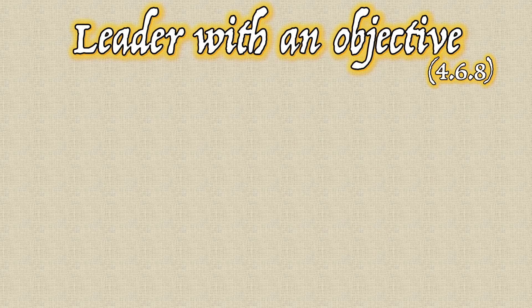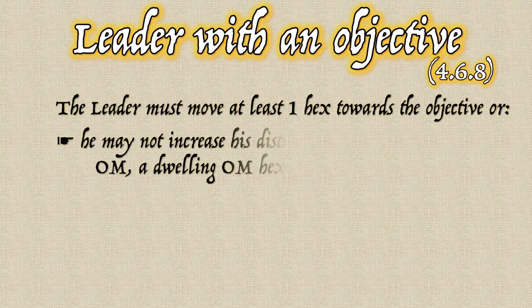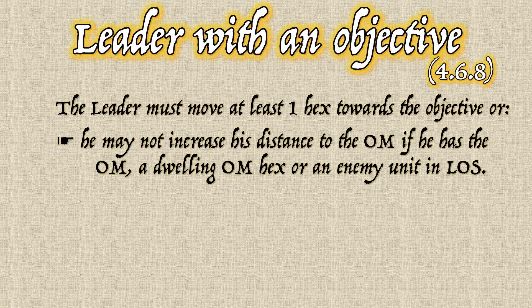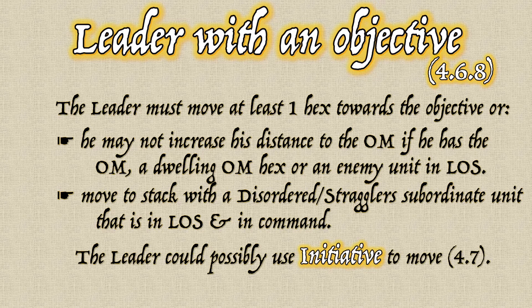If a leader has an implemented objective marker on the map, he must move toward that objective at least one hexagon, reducing his distance to it — unless he has the objective in sight, is in a dwelling hex that is part of the marker's operational area, or has an enemy unit in sight. In those cases, he does not need to move toward the OM and can remain in place or move without increasing his distance to it. The leader can also move to stack with a disordered or stragglers-marked unit to help it reform, or use initiative to issue himself a temporary order allowing movement in a different direction.